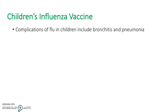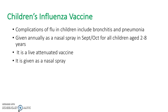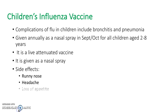The children's flu vaccine is given to reduce the number of children admitted to hospital with complications of flu, such as bronchitis and pneumonia. Compared to the adult vaccine, which is given as an injection, it is a nasal spray given at the start of every school year for children aged 2 to 8. It is a live vaccine and therefore has the ability to cause mild flu-like symptoms.